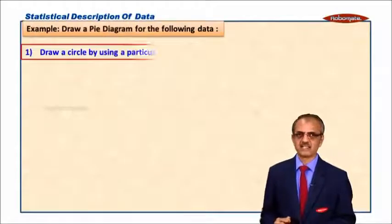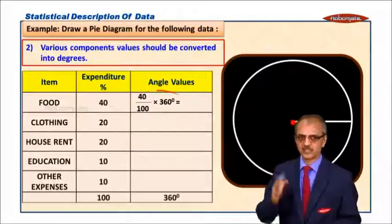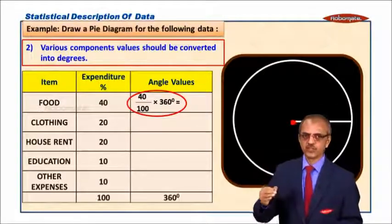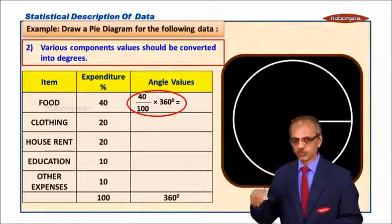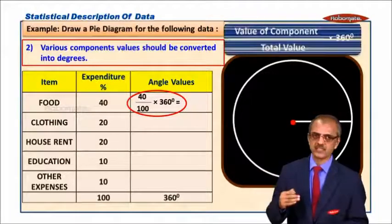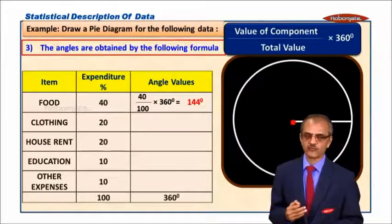Now let us take a simple example how to draw the pie diagram. You already know this concept. For food we have 40% expenditure. That is 40 upon total 100, so 40 upon 100 into 360 equals 360. We get the angle as 144 degrees. So we have to draw the angle of 144 from here.